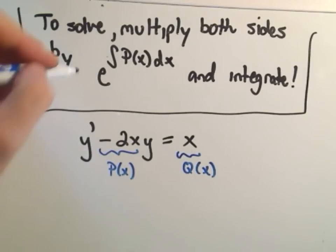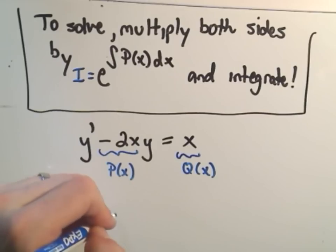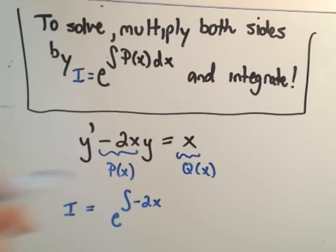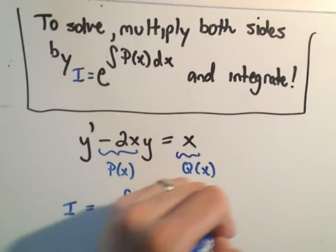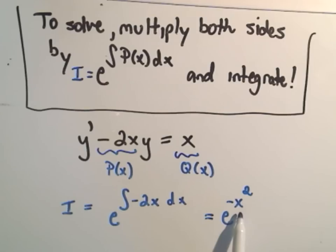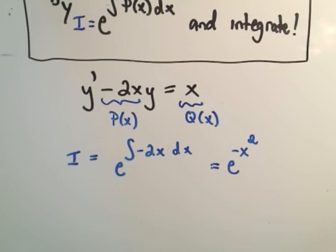So really it says to find this, they sometimes call this the integrating factor. To find this integrating factor we'll take e and raise it to the negative 2x power dx. Well, if we integrate negative 2x we'll just get negative x squared. And it says this is what we're going to have to multiply both sides of our equation by. So let's do that.